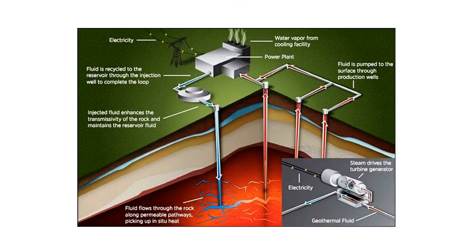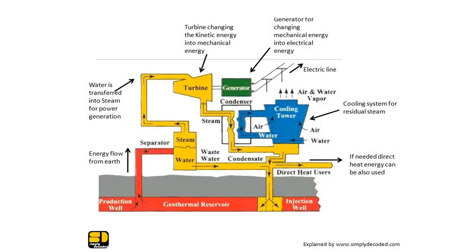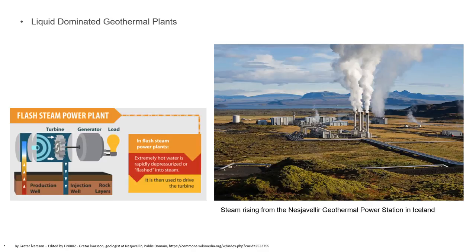There are three main categories of geothermal plants to harvest geothermal energy: liquid-dominated geothermal plants, vapor-dominated geothermal plants, and binary cycle plants. Here we shall discuss the liquid-dominated geothermal plants.